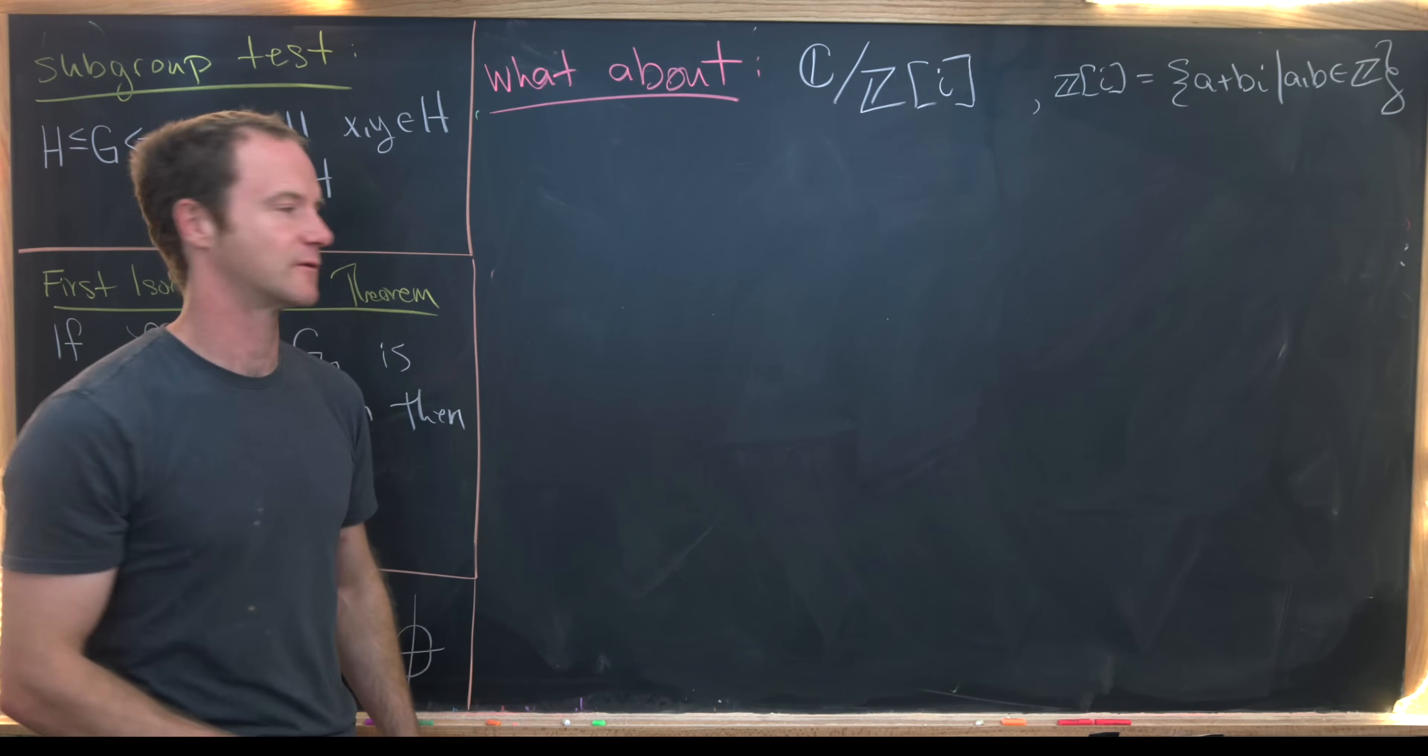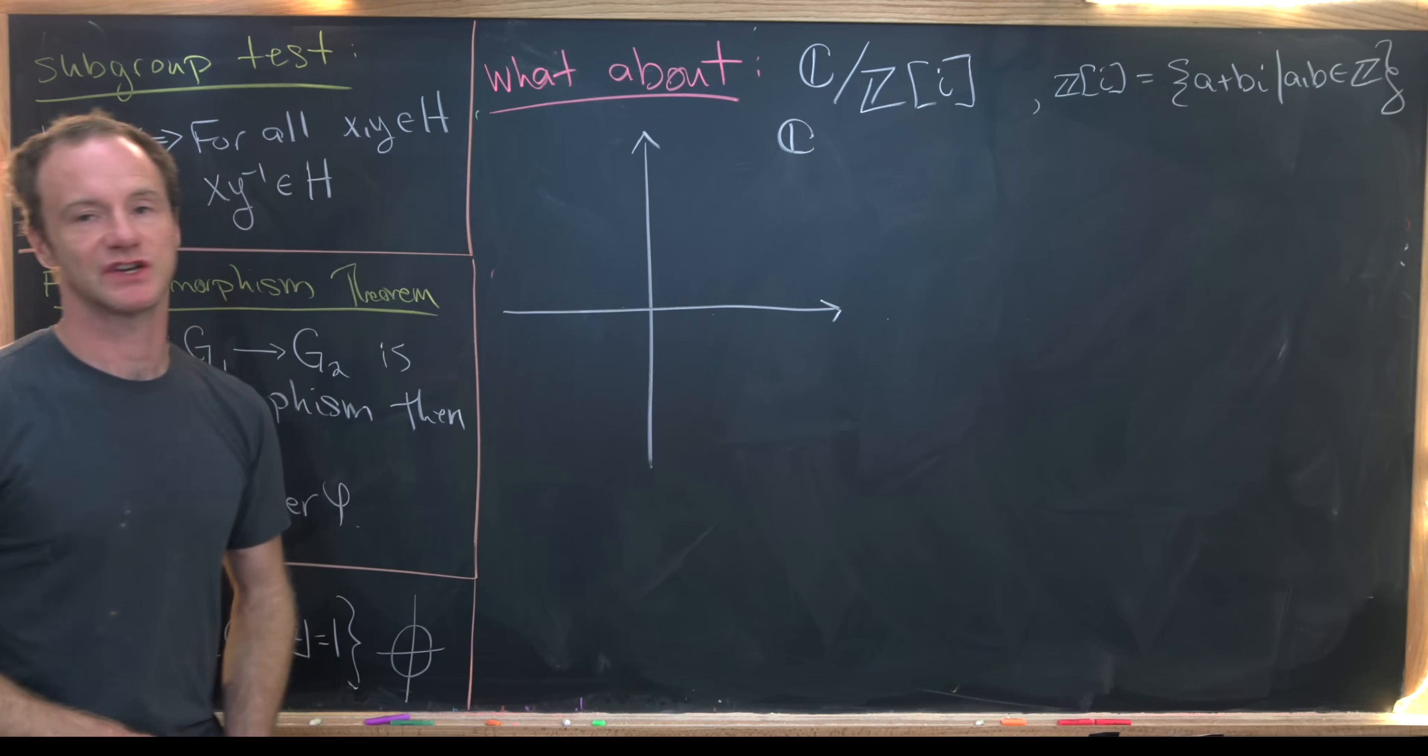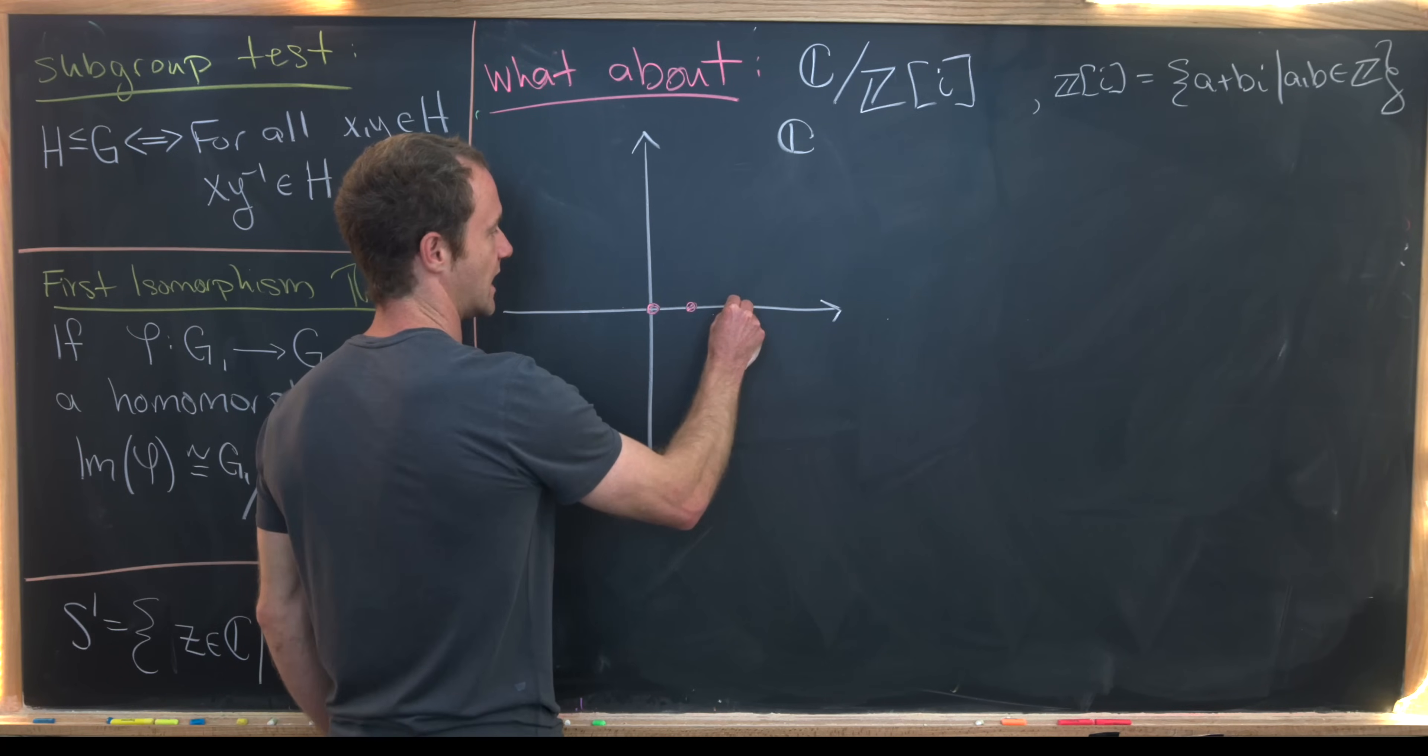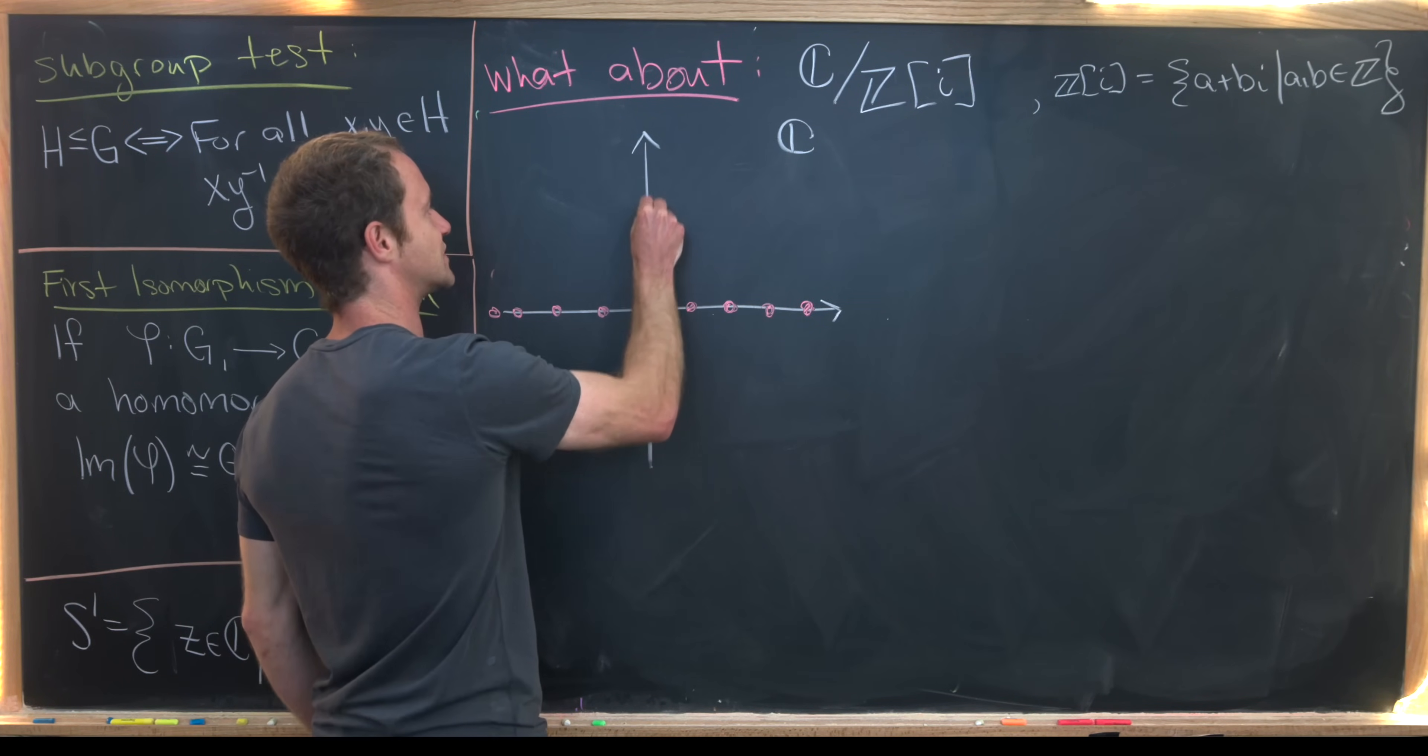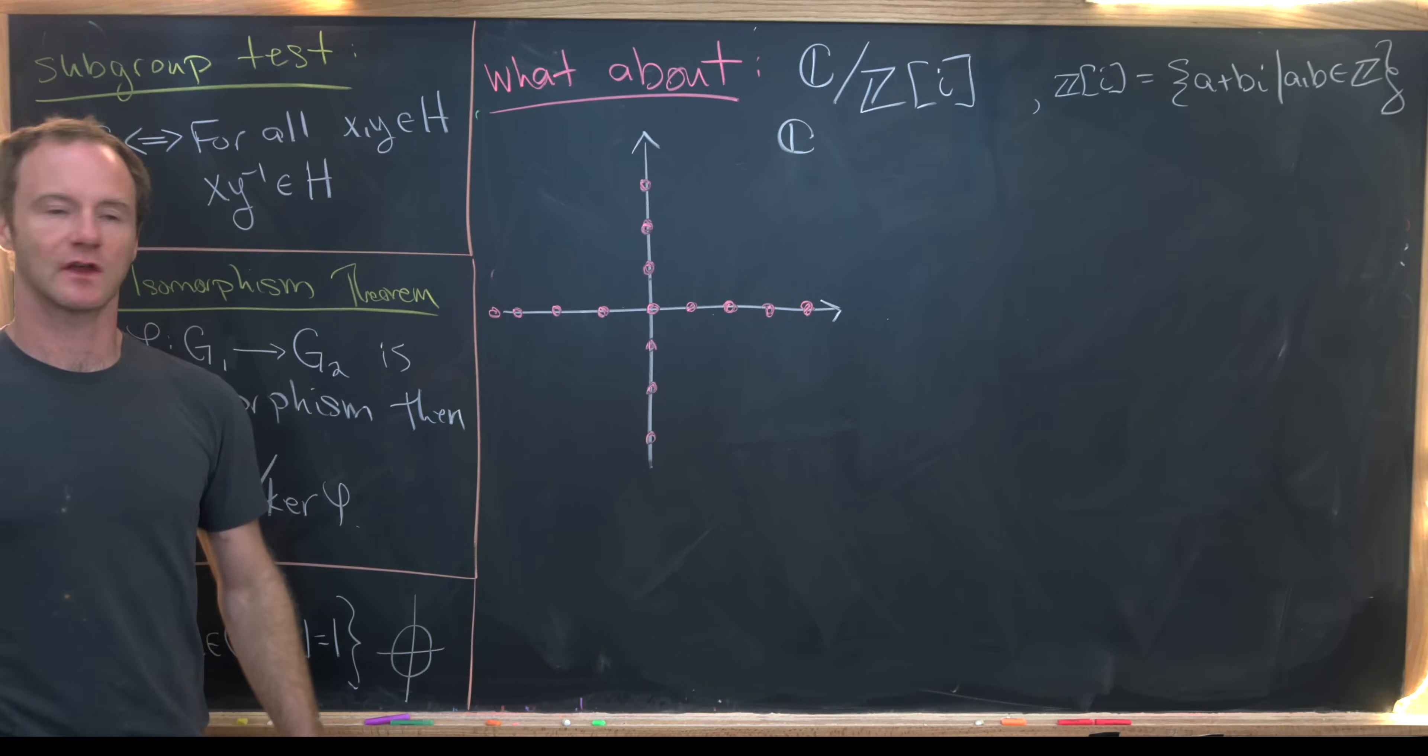So let's maybe get a picture of what's going on here. We can think about this as being the complex plane. So there's our real axis and there's our imaginary axis. And then we've got this discrete set of lattice points given by these Gaussian integers. So we've got zero plus zero i, one plus zero i, two plus zero i, three plus zero i, so on and so forth. So we have all of these dots along the real axis. Then furthermore, we've got a bunch of dots along the imaginary axis like i, two i, three i, minus i, minus two i, minus three i.